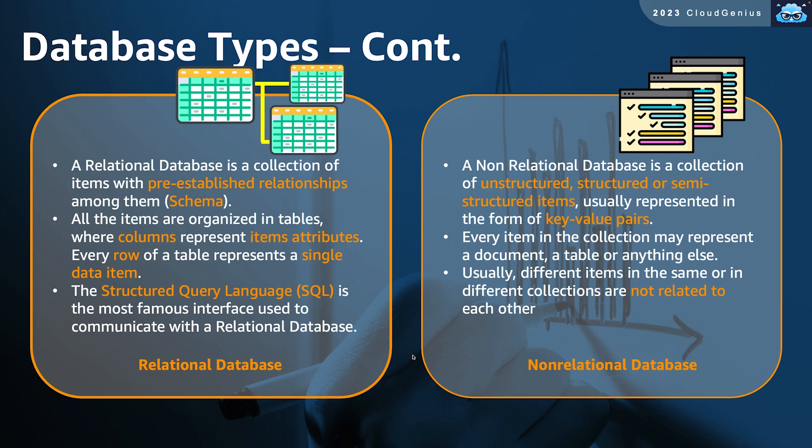One of the most popular structures used to store data within a non-relational database is the key-value pairs structure. Every item in this collection may represent a document, a table, or anything else, and usually different items in the same or in different collections are not tightly coupled or related to each other. The schema followed here is much more flexible and not as rigid as the one in the relational database.